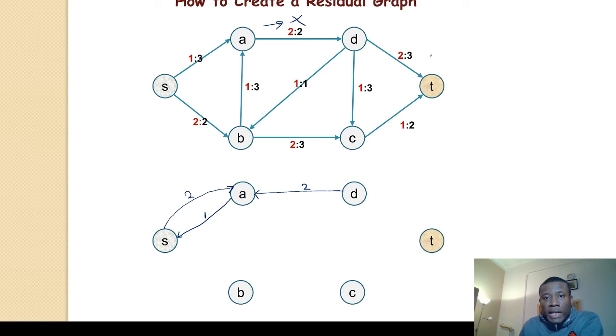Let's consider this. Here we have 2 over 3, meaning we have a flow of 2 already. We can undo it by adding a backward edge of 2. We can add additional forward traffic of 1 because we need 1 more to make this saturated. Simply 3 minus 2 is 1. So we add it in this way. I hope you're following.